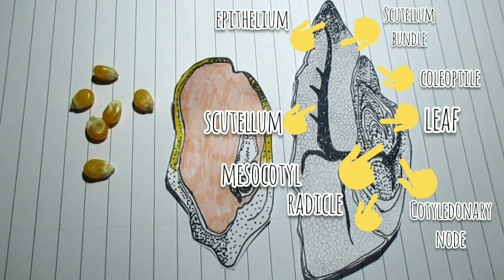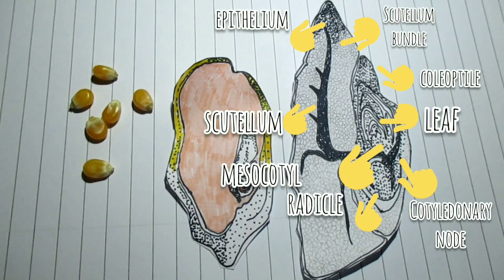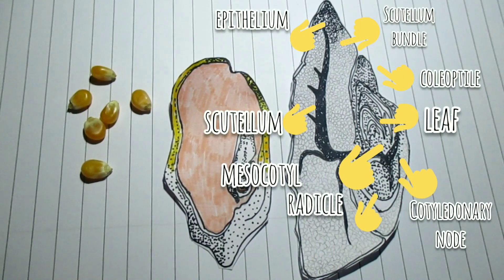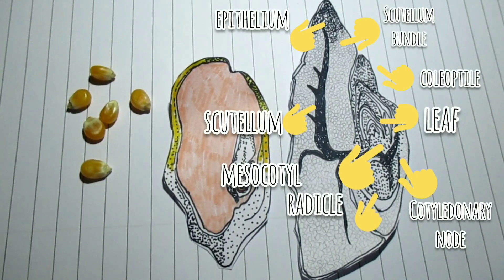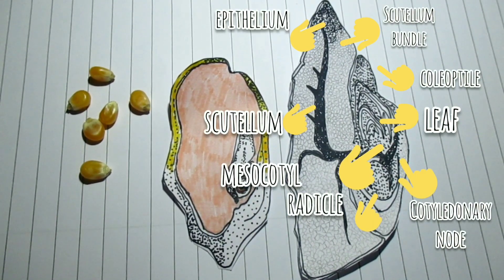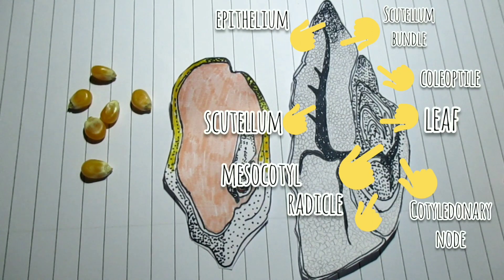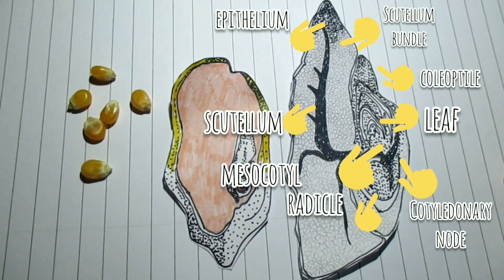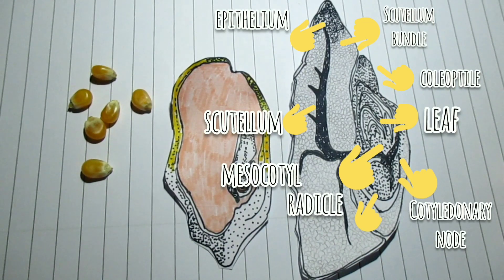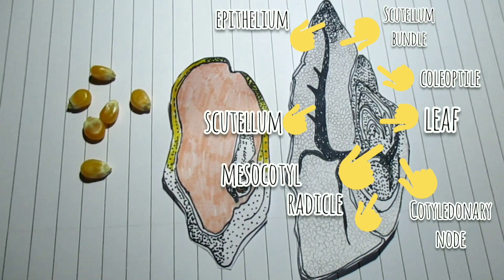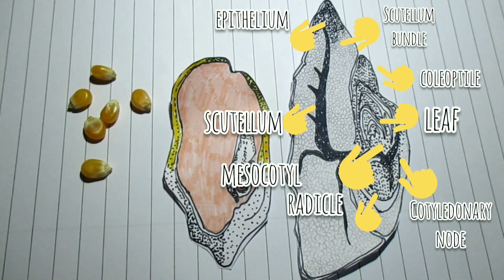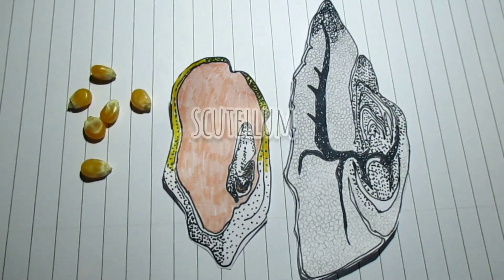Lateral to the scutellum is a short axis, the lower part of which is the radicle covered by a sheath called the coleorrhiza, and the upper part is the plumule showing a number of young leaves sheathed by the coleoptile. A good preparation will show vascular strands emanating from the middle of the axis — that is, the first or cotyledonary node — and ramifying in the scutellum. This is the path through which food travels to the axis. The region between the cotyledonary node and the base of the coleoptile, that is the first internode, is called the mesocotyl.